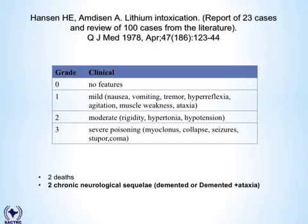This paper is almost 35 years old but still very important. The authors developed a grading of lithium toxicity based on 23 of their own cases and a review of 100 cases from the literature. This grading correlates best with chronic rather than acute toxicity. Importantly, in their 23 patients followed up, they found two with chronic neurological sequelae persisting greater than two months, and two deaths in that case series.